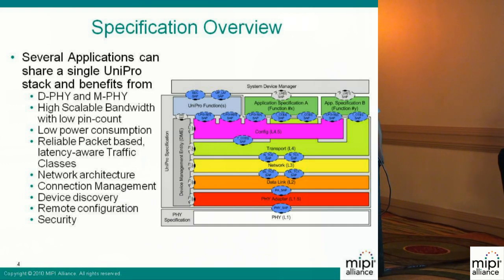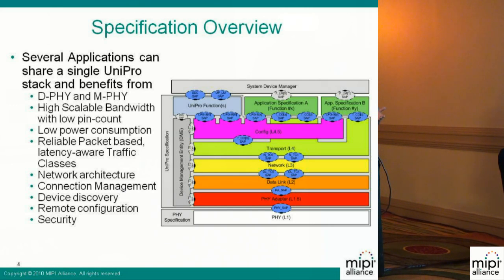On the bottom of the UniPro specification, we have the PHY specification, which is outside the scope of UniPro — it is defined by a PHY working group. It can be either the D-PHY or M-PHY. On top of UniPro, we have the application specification, such as application A and application B — for example, a camera specification or mass storage device specification. These specifications are outside the scope of UniPro.